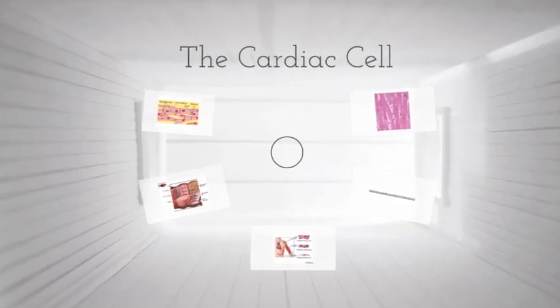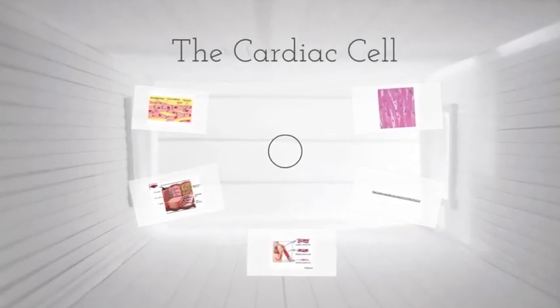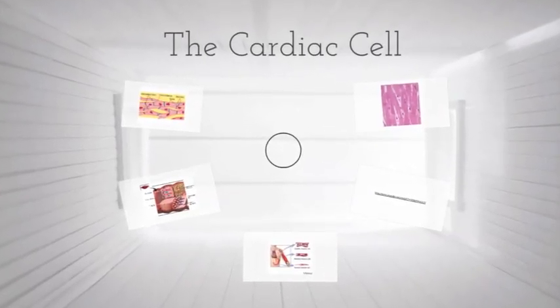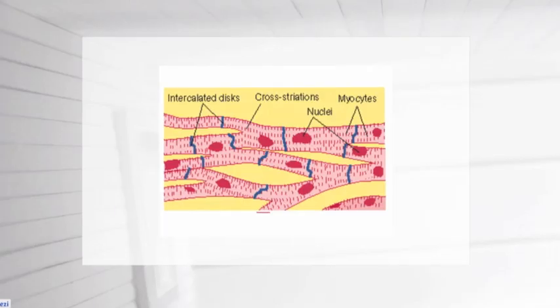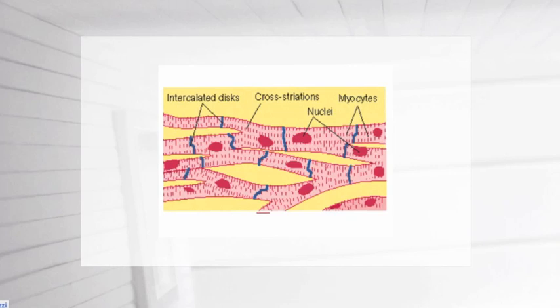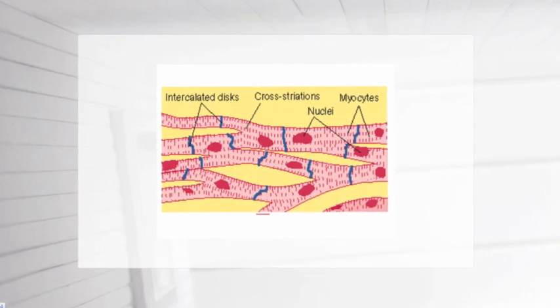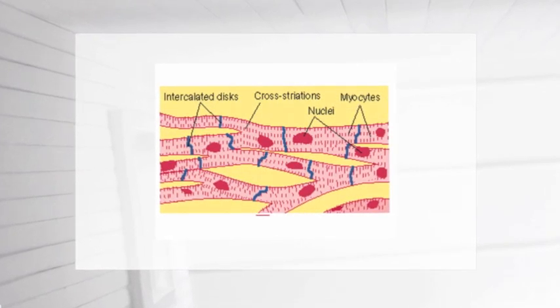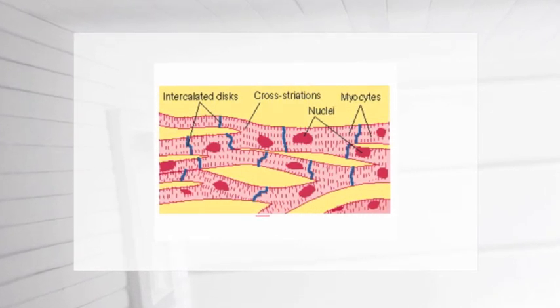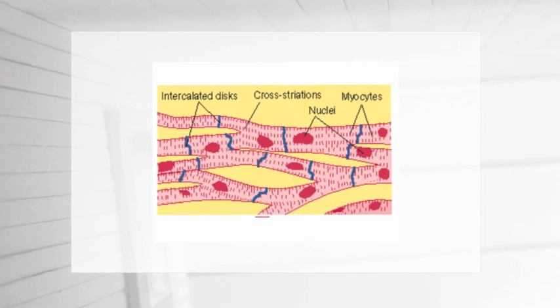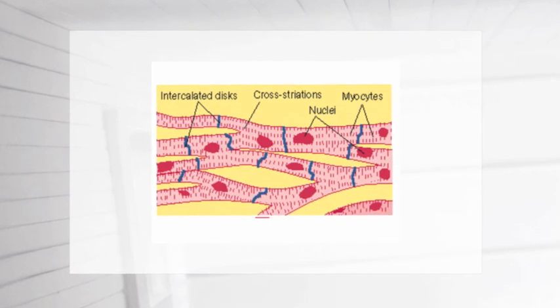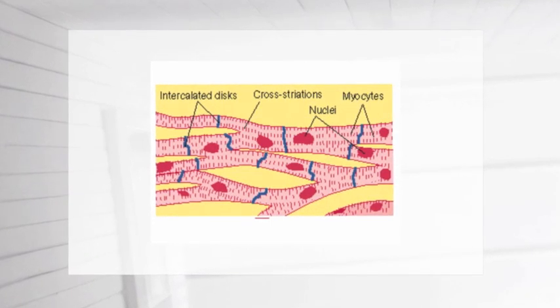The Cardiac Muscle Cell by Marin Owens. The cardiac muscle cell is a Y-shaped cell found in the heart. It is striated, which means you can see the dark and light spots of the cell.